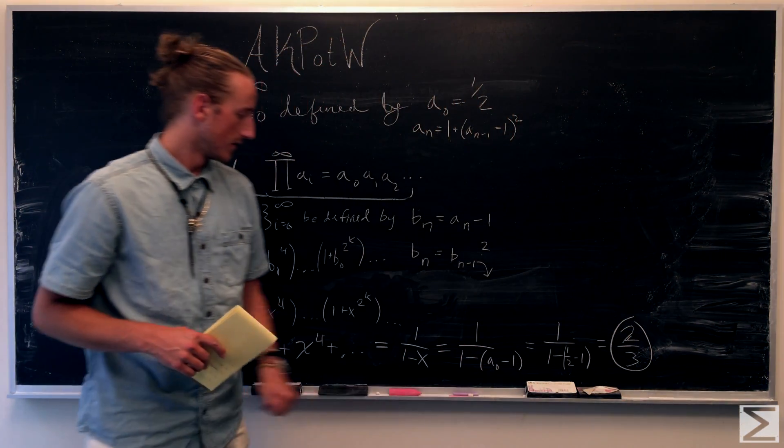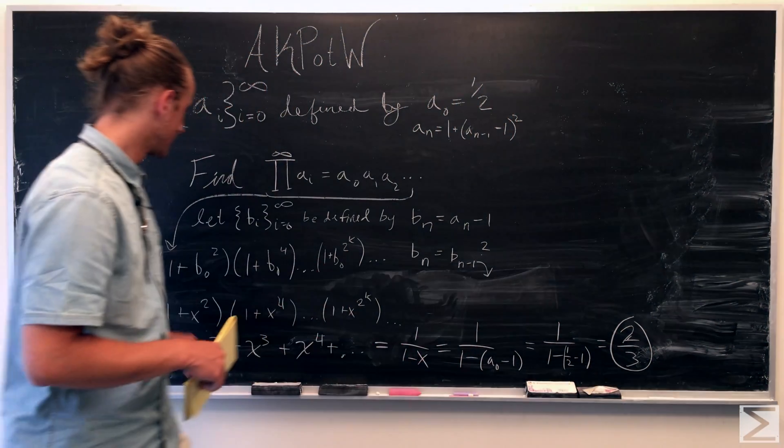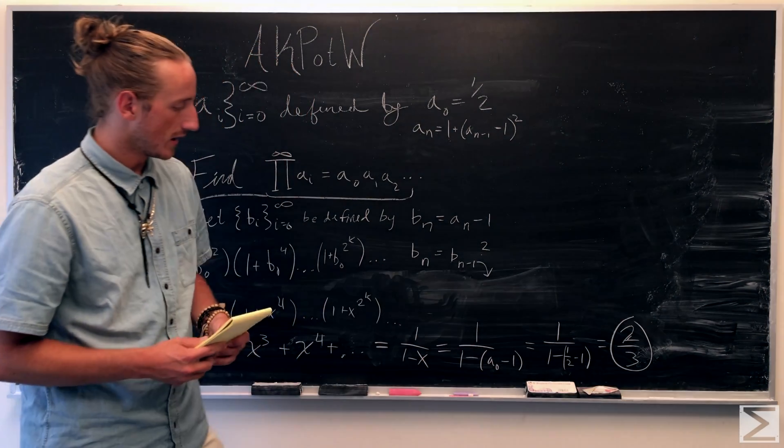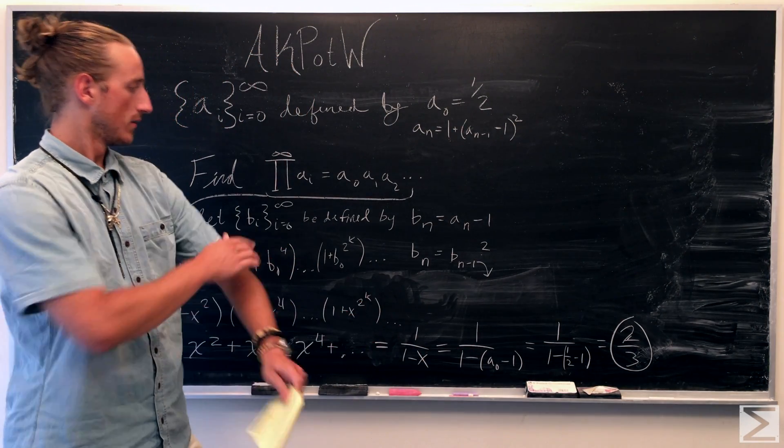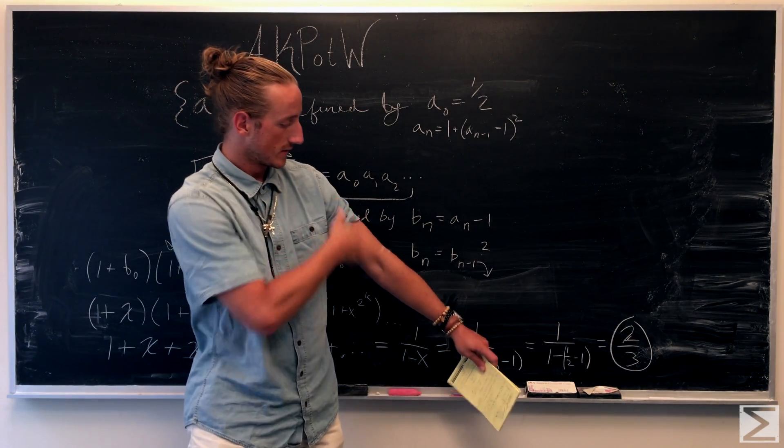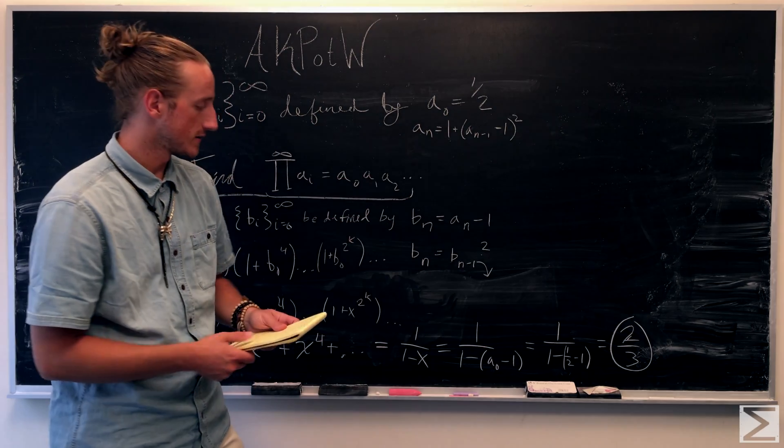So plugging in our x, which is b naught, we know that b naught is a naught minus one. So one minus, we also know a naught is one half, which was given to us.